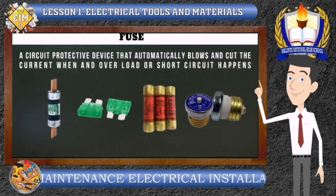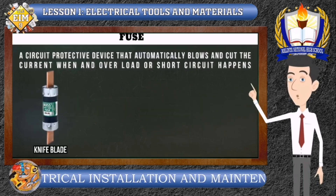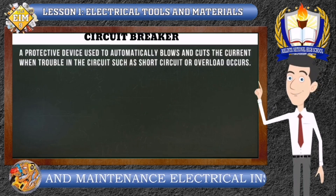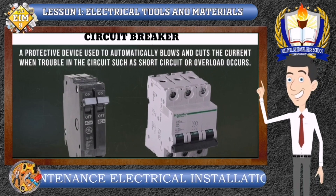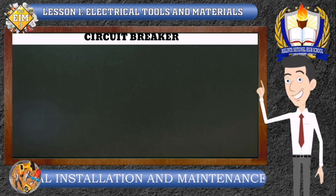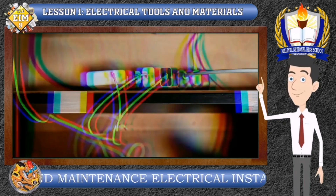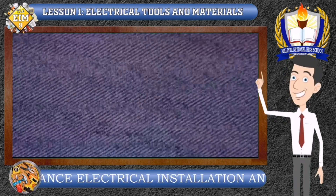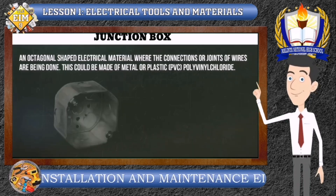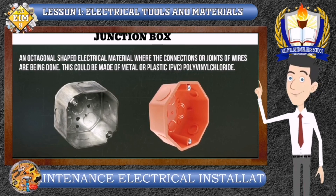Fuse is a circuit protective device that automatically blows and cuts the current when an overload or short circuit happens. Fuse and circuit breaker have the same function. The only difference is that when trouble in an electric circuit occurs, the fuse will be damaged and needs replacement, while the circuit breaker will just switch off and needs to be switched back on. Junction Box is an octagonal-shaped electrical material where the connections or joints of wires are done. This could be made of metal or plastic PVC (polyvinyl chloride).